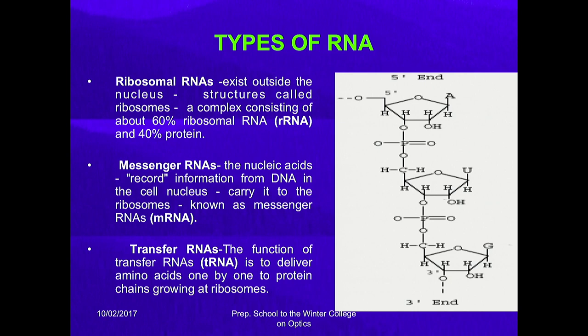There are three kinds of RNA. Ribosomal RNA exists outside the nucleus in structures called ribosomes which produce proteins — a complex of about 60 percent ribosomal RNA and 40 percent protein. Messenger RNA records information from DNA in the cell nucleus and carries it to the ribosomes. Transfer RNA delivers amino acids one by one to protein chains growing at ribosomes — it carries different amino acids to the ribosome to carry out protein synthesis.